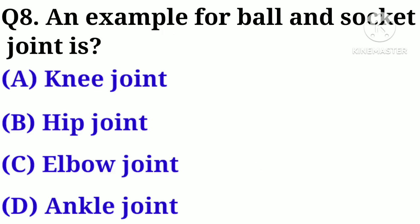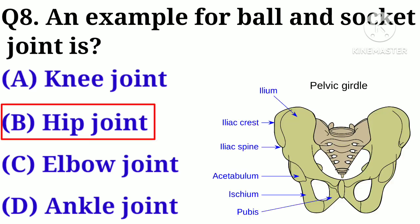Q8. An example of a ball and socket joint is: A. Knee joint, B. Hip joint, C. Elbow joint, D. Ankle joint. Answer: B. Hip joint.